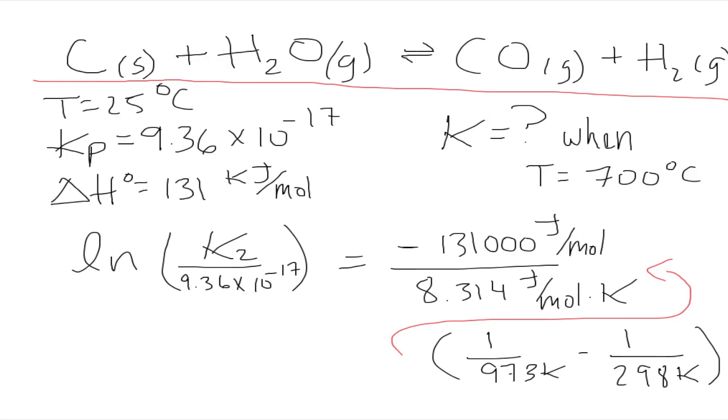Right now because of how long this is, I'm just going to call this X. Then you would just write that K2 over 9.36 times 10 to the negative 17 is equal to E to the power of X. And that's how you get rid of the natural logarithm.